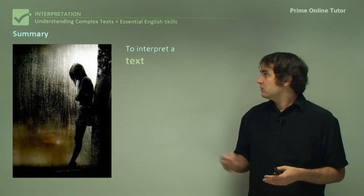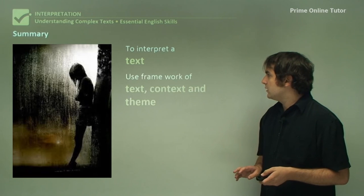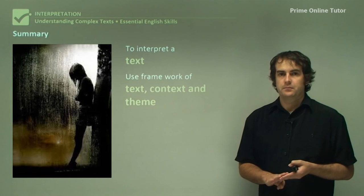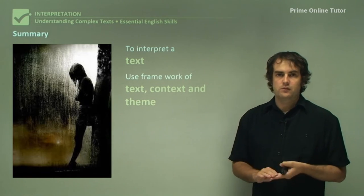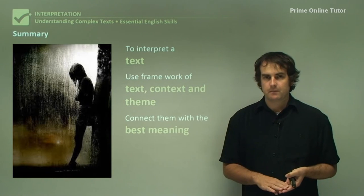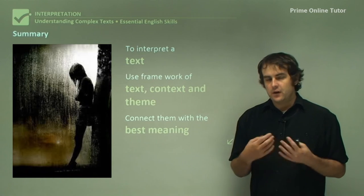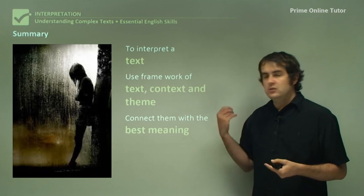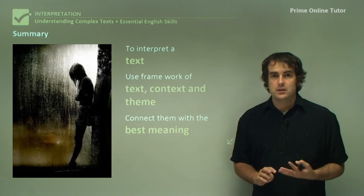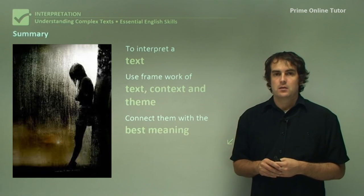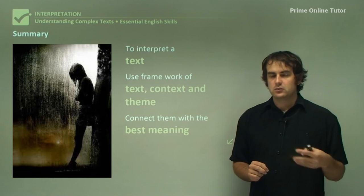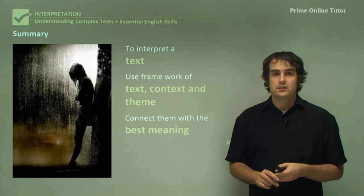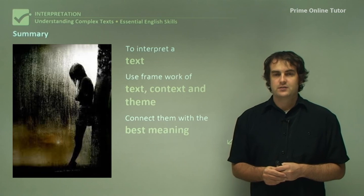In summary, to be able to interpret a text, you need to use the framework of text, context, and theme — and you can't ignore them. You need to make sure that you discuss them and go through them in depth. You need to connect them with the best meaning. Like we did there, finding the best meaning is essentially where you need to be going. I could have given you any one of those twelve answers from the beginning and stuck with it, but what I've chosen is the best one because I really looked at it carefully, thought about these things, and given the best possible answer. Until next time, I'll see you later.